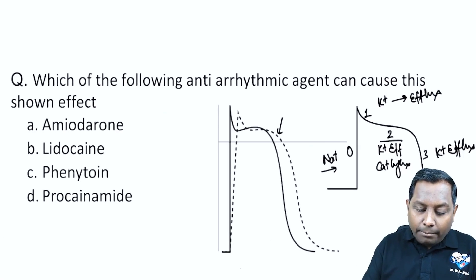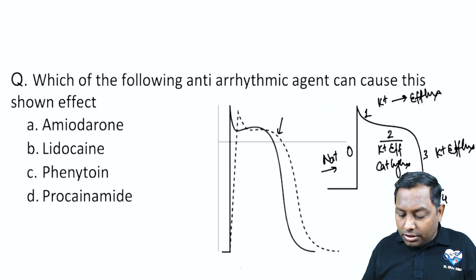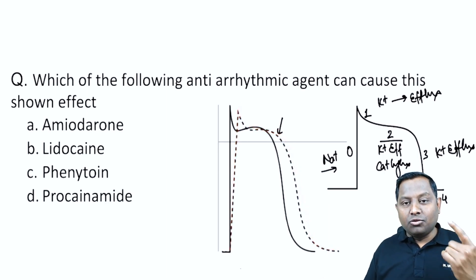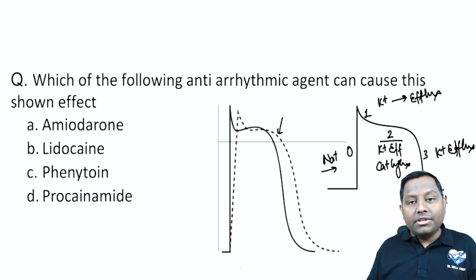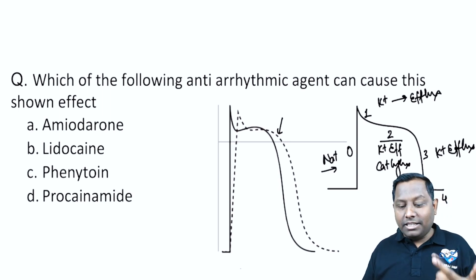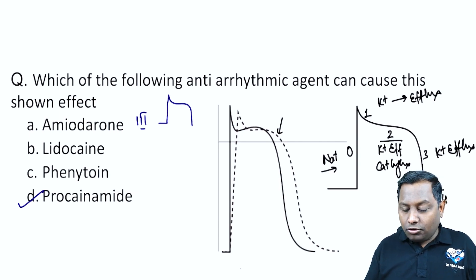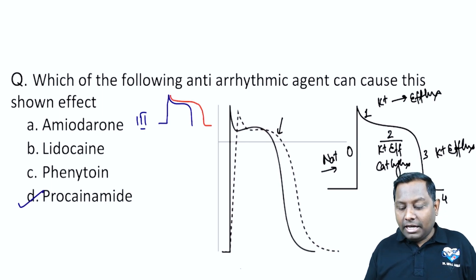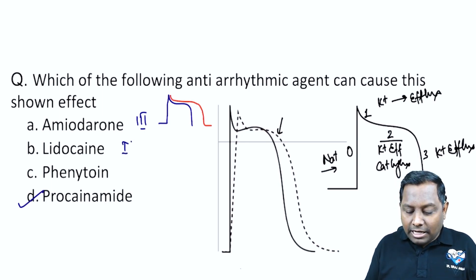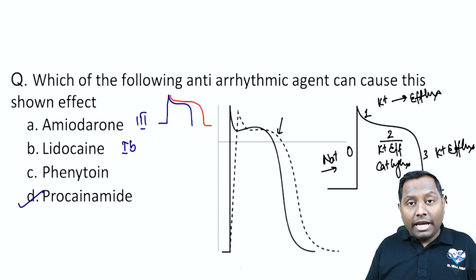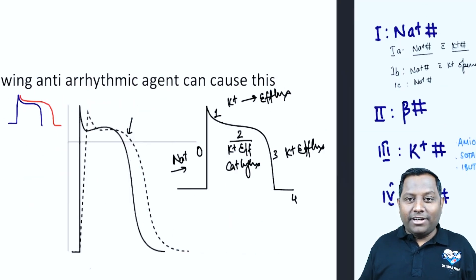Looking at the exam question graph: there is a decrease in the slope of depolarization AND an increase in action potential duration — indicating both sodium channel blocking and potassium channel blocking properties. This corresponds to Class 1a. Among the options, Procainamide (the Prince) fits. Amiodarone is Class 3, Lidocaine is Class 1b, and Phenytoin is also Class 1b. The answer is the Class 1a drug.